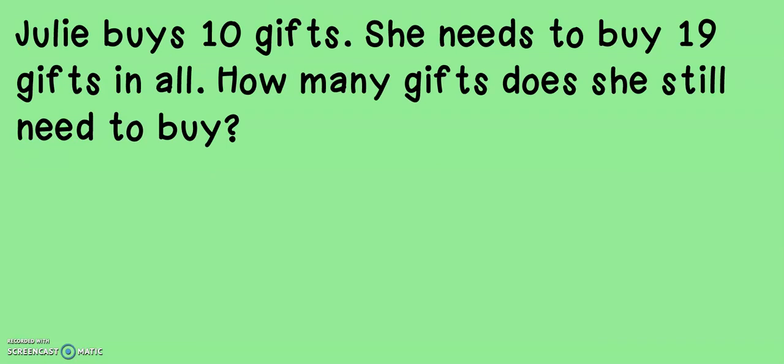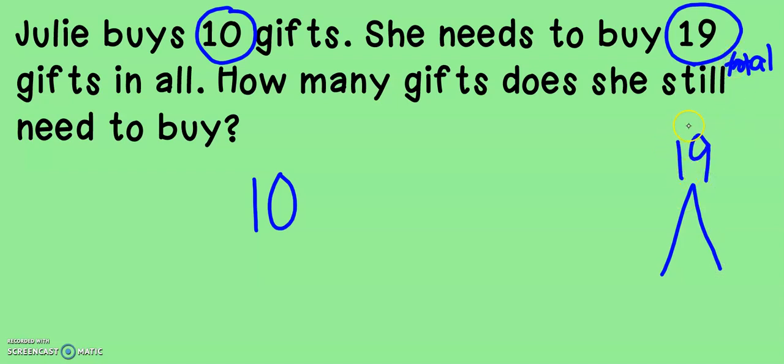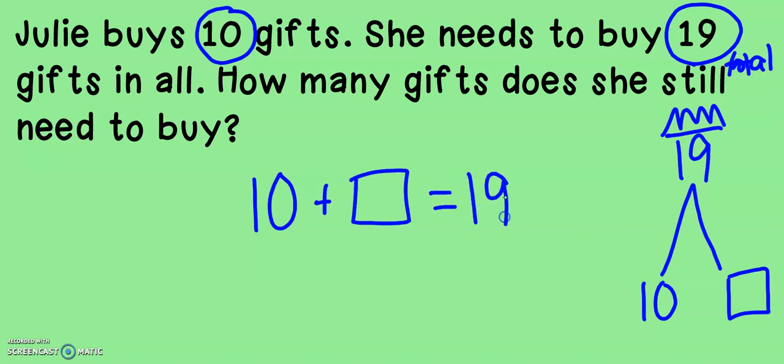Look at the third problem. Julie buys 10 gifts. She needs to buy 19 gifts in all. How many gifts does she still need to buy? Now, let's think about what we know in this problem. We know that Julie has already bought 10 gifts, but she needs to buy 19. That is her total. So if that's her total, I can put that on a math mountain. She needs 19 total. That means that's my king. She already has 10, but she needs to buy some more. So 10 plus something gives me 19.